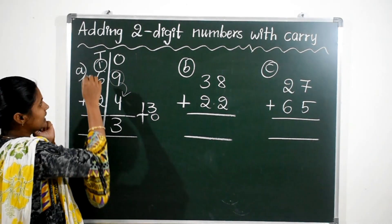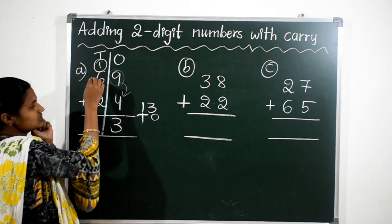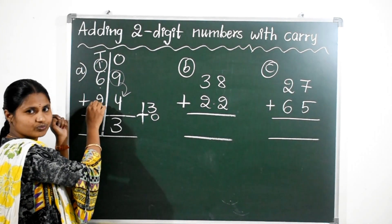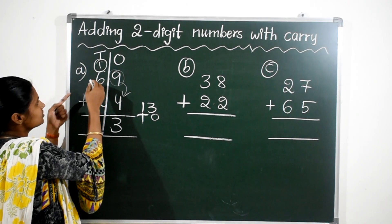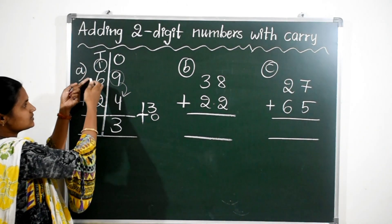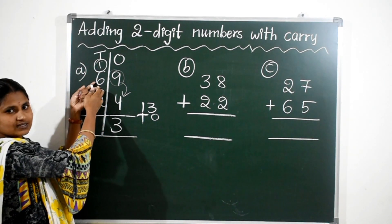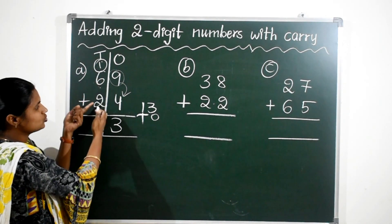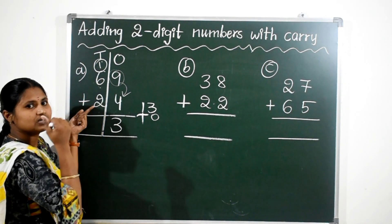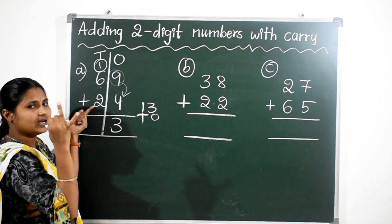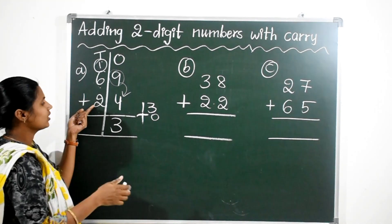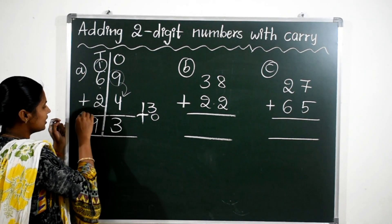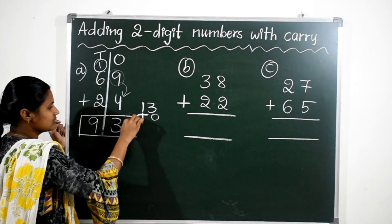Now add 1, 6, and 2. 1 plus 6 is 7; 7 plus 2 is 9. So the answer is 93.